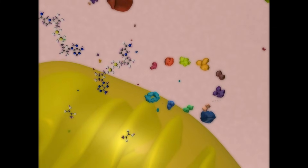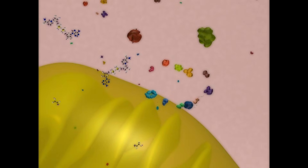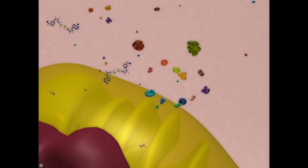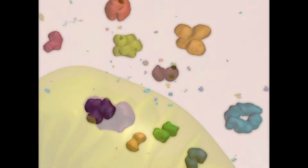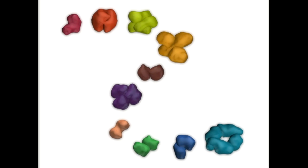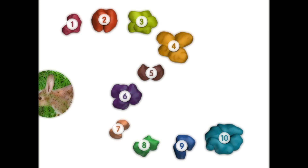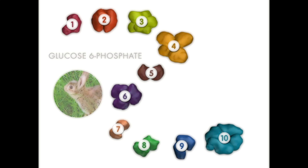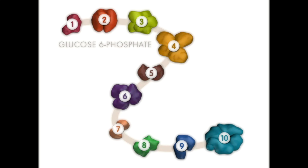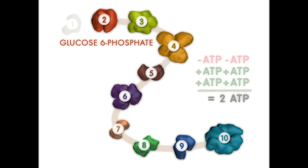Here we depict glycolysis as a closed process, but in cells, substrates produced by other reactions can enter glycolysis at different points. For example, when an animal breaks down glycogen, glucose-6-phosphate is produced and can enter the glycolysis pathway at the second step. Importantly, this means one less ATP is required for the pathway because the first ATP-consuming step is skipped.